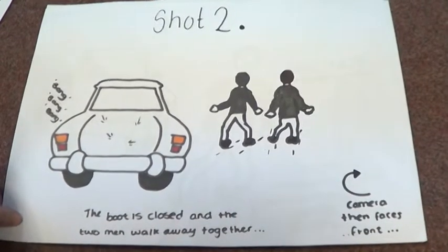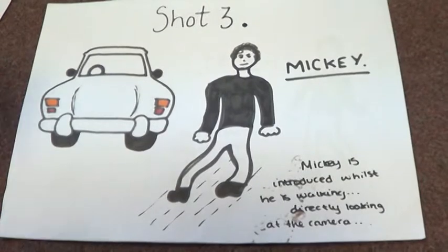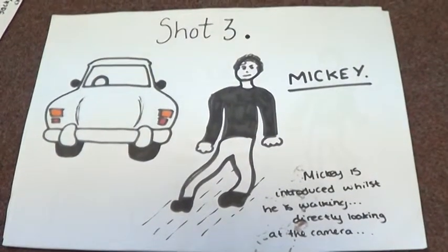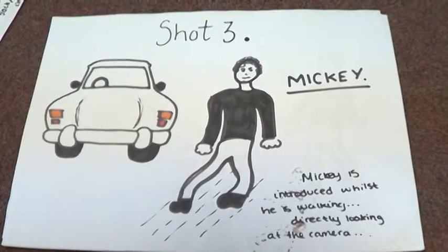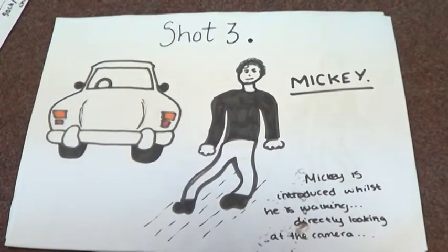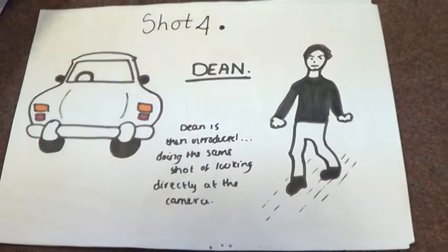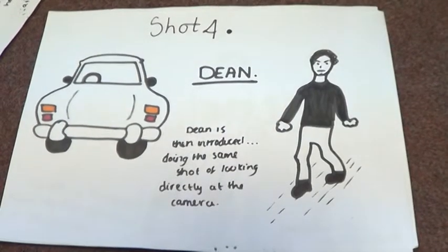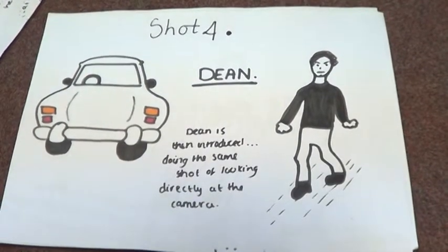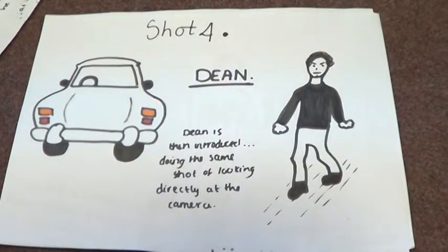Shot 3 introduces us to only one male; the walking has become slow motion as his name is introduced to the audience. Shot 4 is a quick cut to the other male, also filmed in slow motion. In both shots, they look directly at the camera.